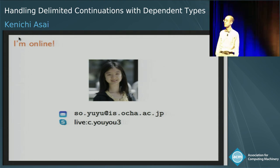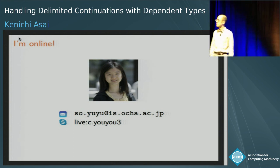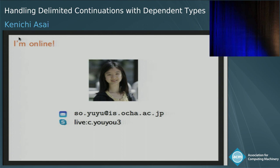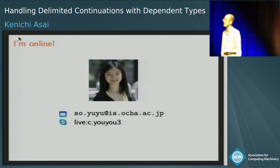We have a number of questions. The first: are restrictions one and two related to the split context used for some linear dependent type systems? The speaker responds that they are not familiar with that and cannot comment on it.